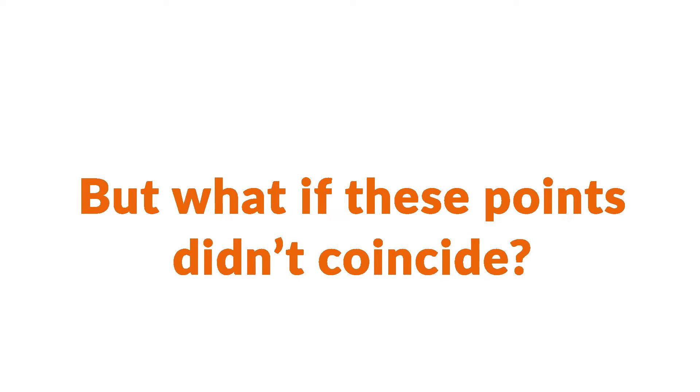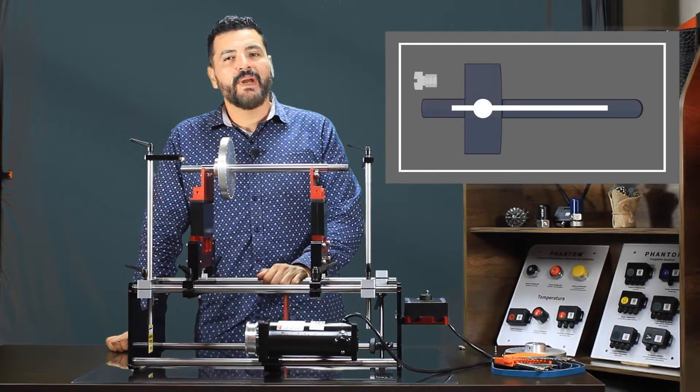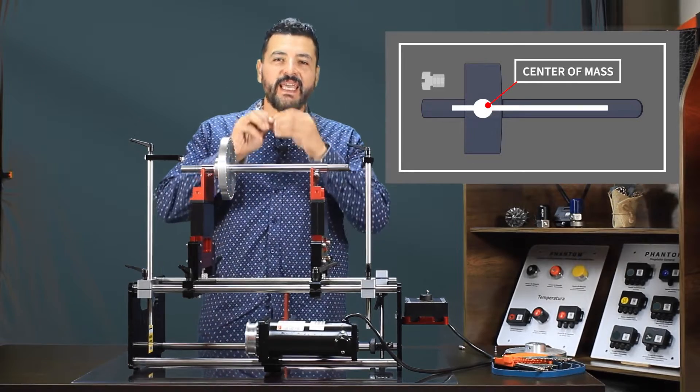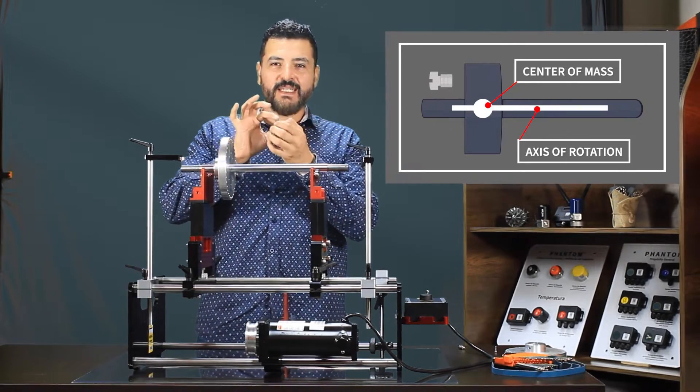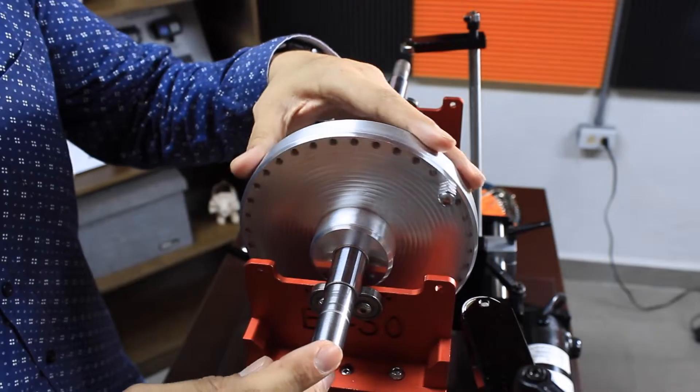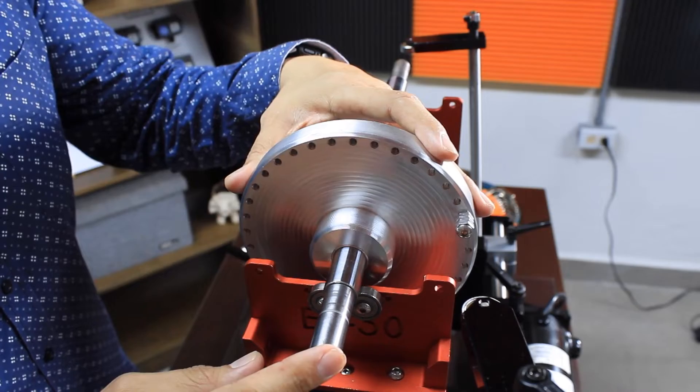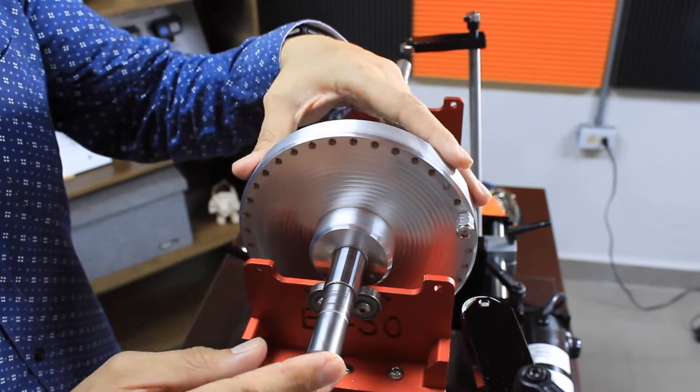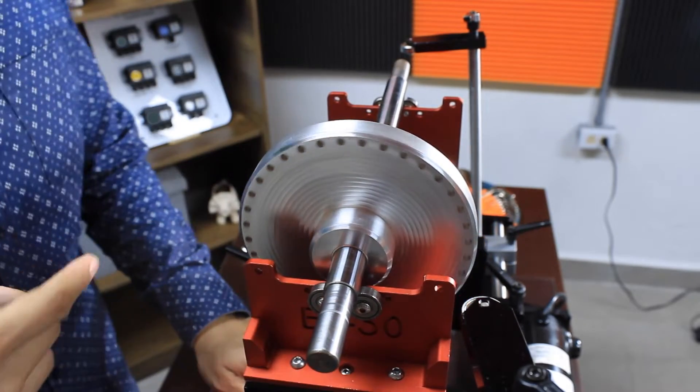But what if those points didn't coincide? To demonstrate, let's screw this screw with nuts at a known distance. We see now that when we move the system, the disc rotates so that the heaviest part settles at the bottom. It doesn't remain static, but why?